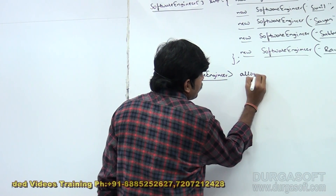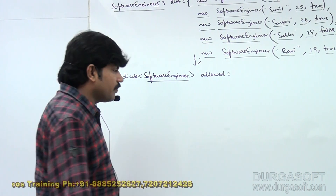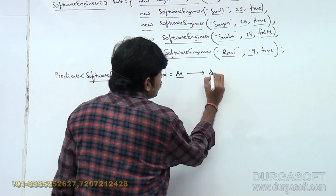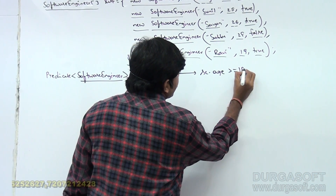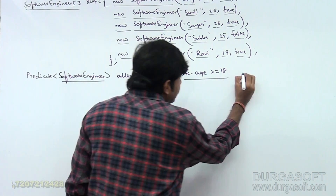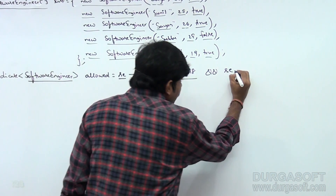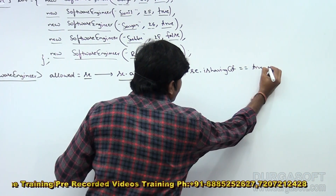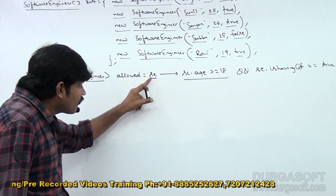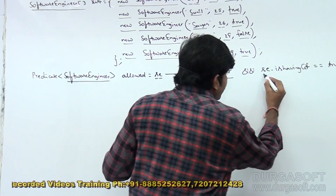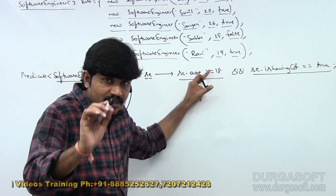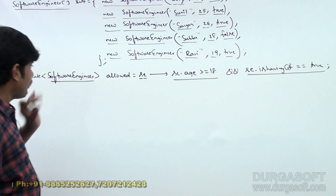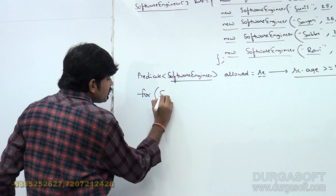The predicate reference variable 'allowed' is defined as: allowed = (se) -> se.age >= 18 && se.isHavingGirlfriend == true. So if I give a software engineer object as argument, the predicate checks compulsorily that his age is greater than or equal to 18 and this person has a girlfriend.